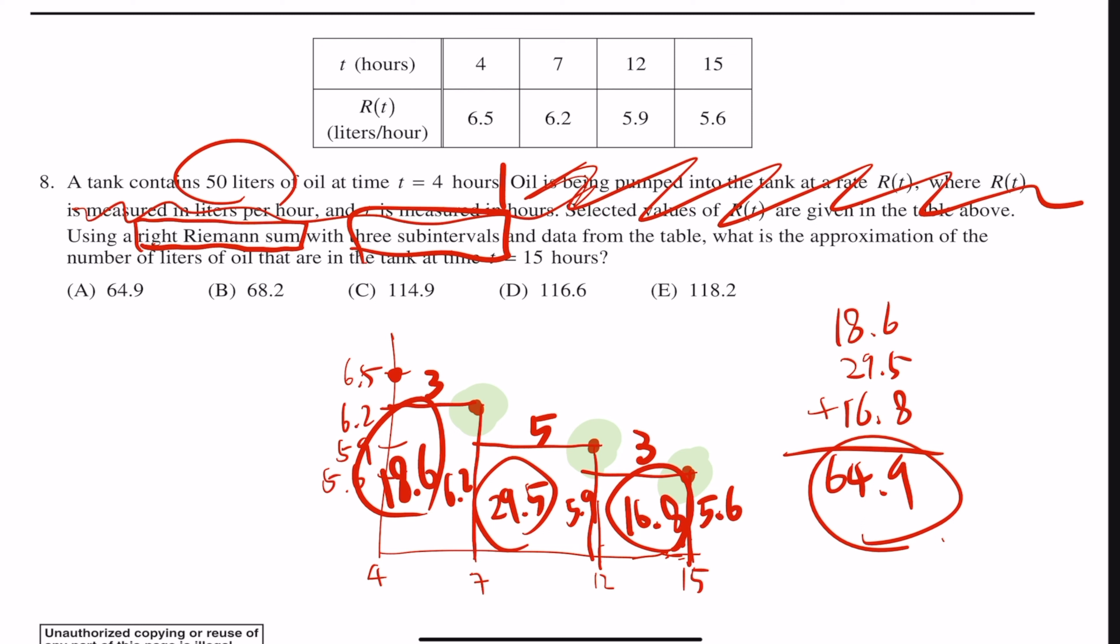So we have this 50 liters that we began with, so you must add that as well, and that's why the answer choice must be 114.9, answer choice C. It's not A, be careful with that.